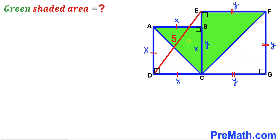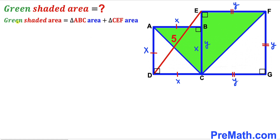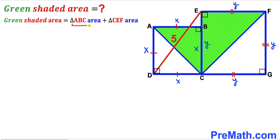The green shaded region consists of two triangles: triangle ABC and the right triangle EFC. Therefore, the green shaded area is equal to the sum of the area of triangle ABC plus the area of triangle CEF.